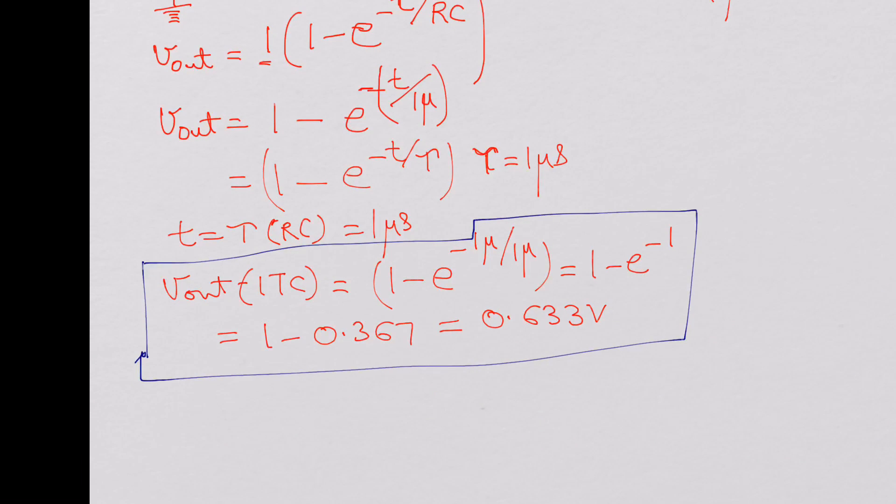V out at 2 time constants, if you calculate, would work out to 1 minus e power minus 2, that would be 0.864 volts.